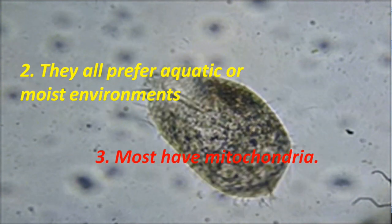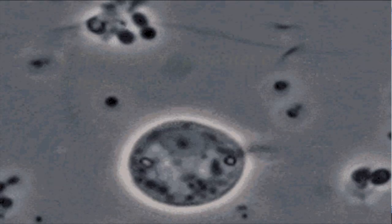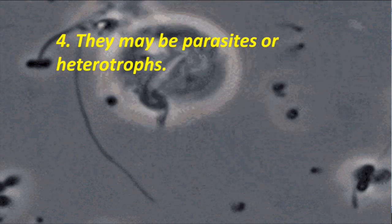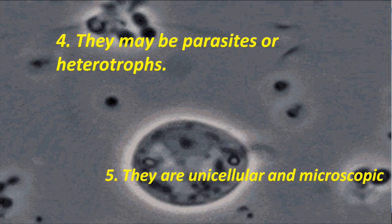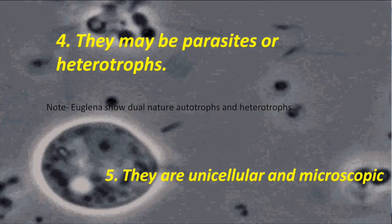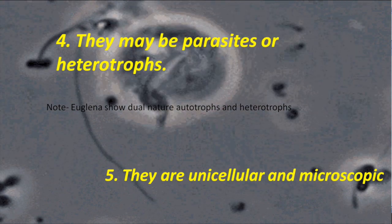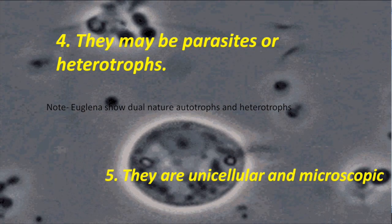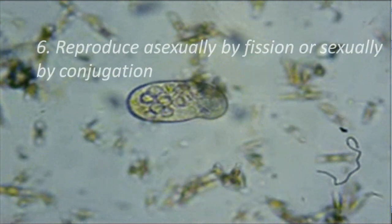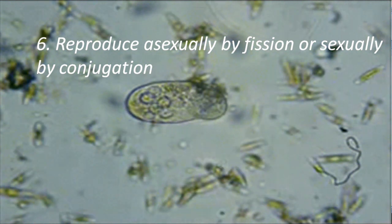Must have mitochondria. They may be parasites or heterotrophs. They are unicellular and microscopic. Note: Euglena shows dual nature — autotrophs and heterotrophs both. Reproduced asexually by fission or sexually by conjugation.